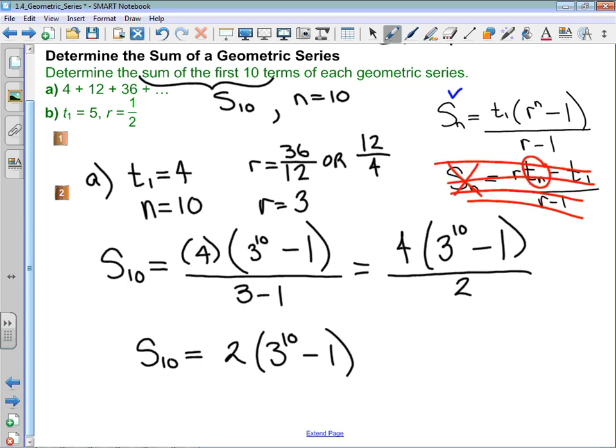Really quickly, term 10 would be the first term 4 times 3 to the power of 10 minus 1. When I put that into my calculator, I get that term 10 is 78,732.